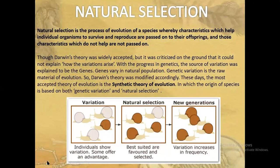Natural selection is a process of evolution whereby characteristics which help individual organisms to survive and reproduce are passed to their offsprings, and those that do not help will not be passed on. Darwin's theory was widely accepted but criticized because it could not explain how variations arise. With the progress of genetics, the source of variation was explained to be the gene. The most acceptable theory today is the synthetic theory of evolution, which is a modification of Darwin's theory, based on both genetic variation and natural selection.